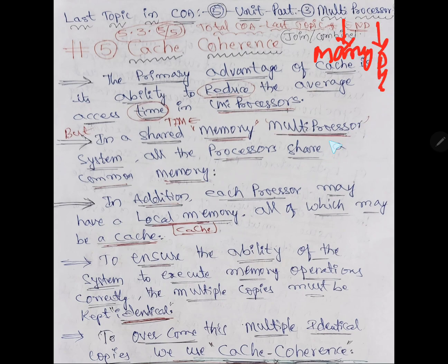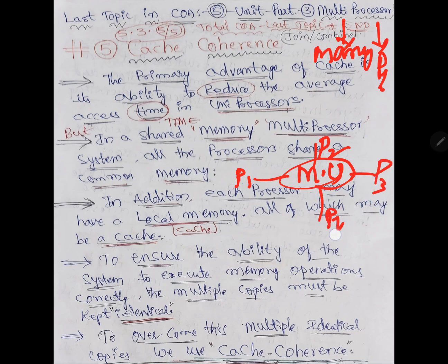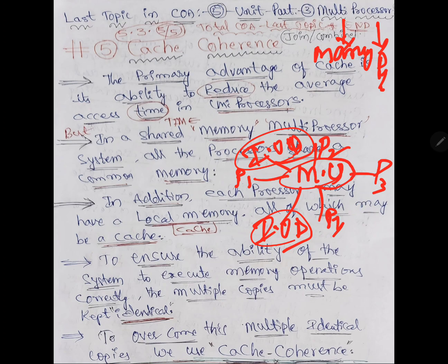We have P1, P2, P3. So far we have seen single processors, nothing but uniprocessors. Generally in a multiprocessor system, a memory unit is shared with processor 1, processor 2, processor 3, processor 4 and input output devices like mouse, keyboard and all. So the system will be like this.